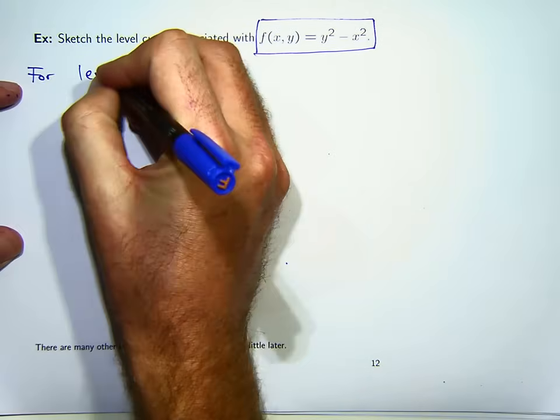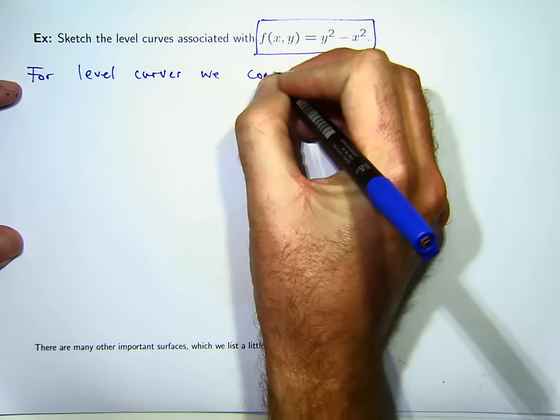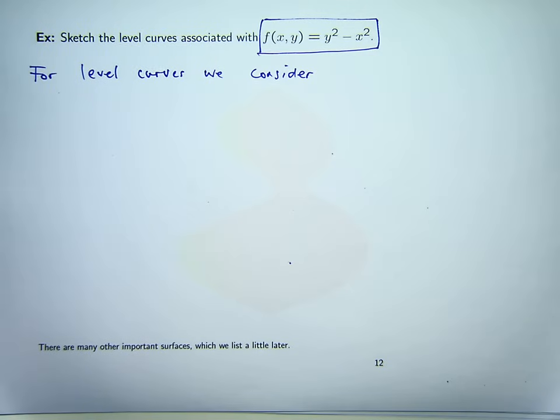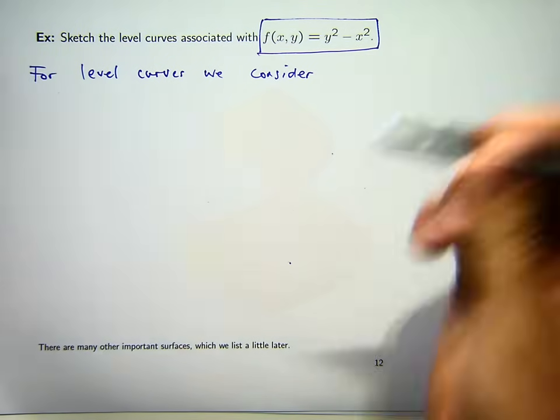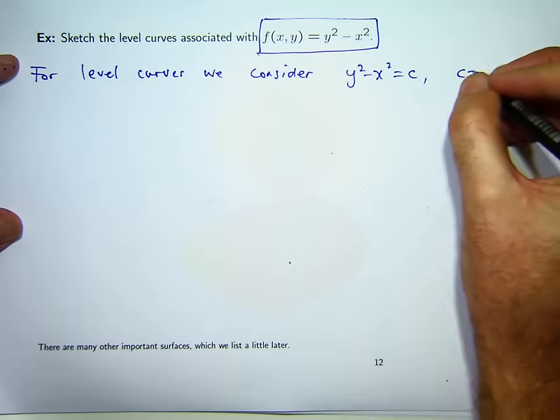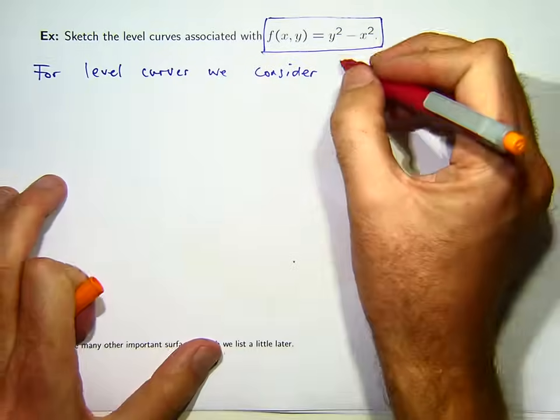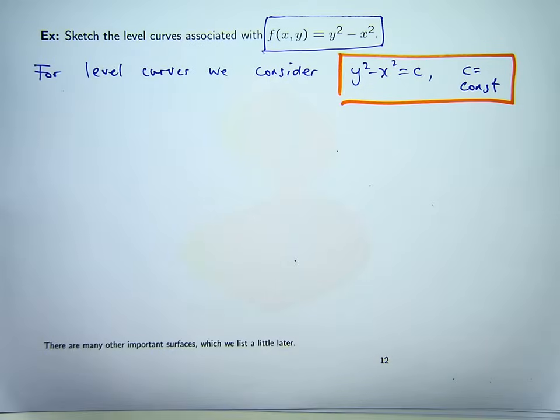So, for the level curves, we consider f of x comma y equals a constant, C say. And then what we do is we make some choices for C that give us some intuition and that give us some easy ways to hopefully draw these level curves.